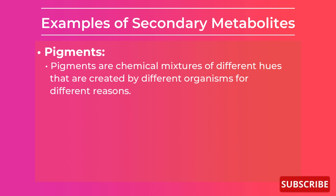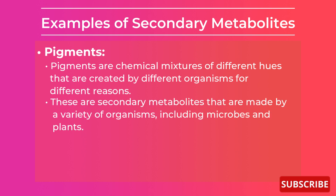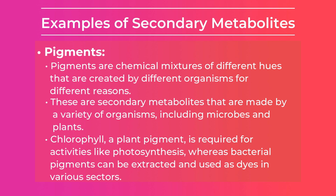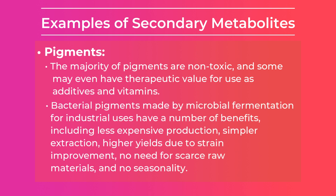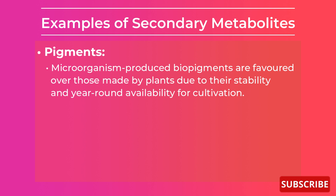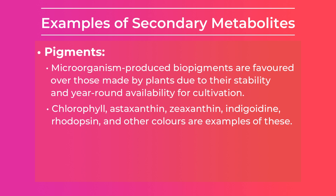Examples of secondary metabolites include pigments and flavonoids. Pigments are chemical mixtures of different hues created by different organisms for different reasons. These secondary metabolites are made by a variety of organisms including microbes and plants. Chlorophyll, a plant pigment, is required for activities like photosynthesis, whereas bacterial pigments can be extracted and used as dyes in various sectors. The majority of pigments are non-toxic, and some may have therapeutic value. Bacterial pigments made by microbial fermentation offer benefits including less expensive production, simple extraction, higher yield due to strain improvement, and year-round availability. Examples include chlorophyll, astaxanthin, zeaxanthin, indigoidine, and rhodopsin.